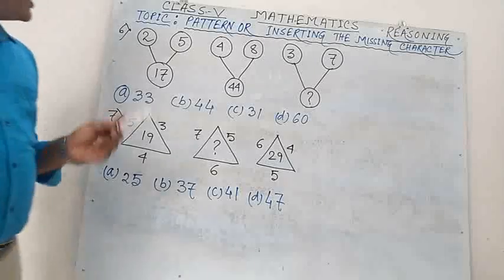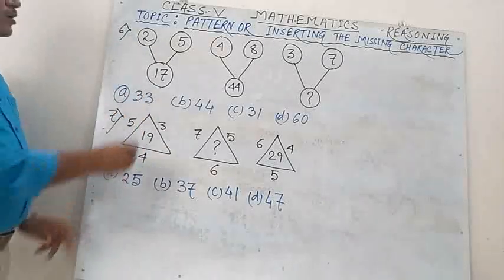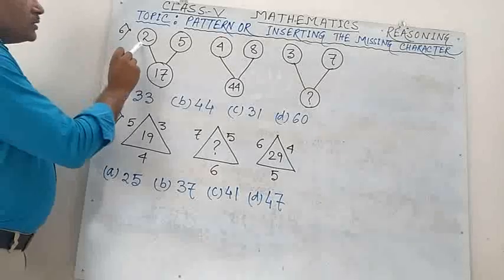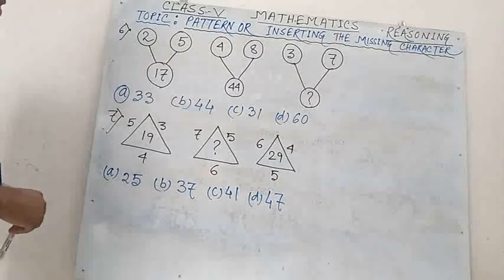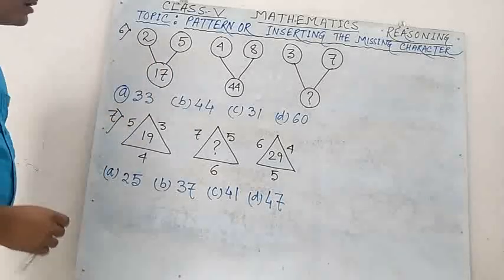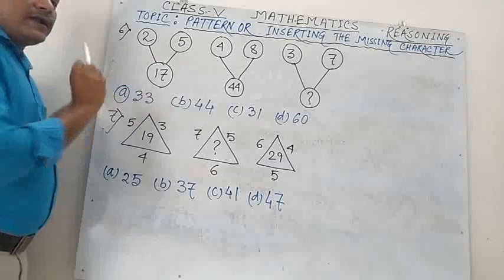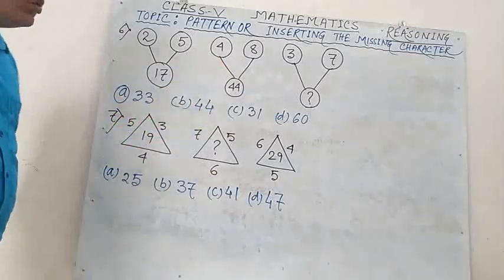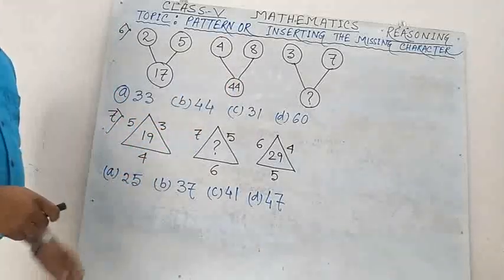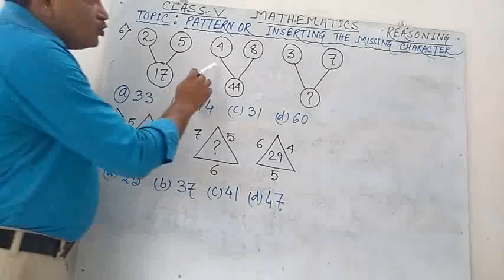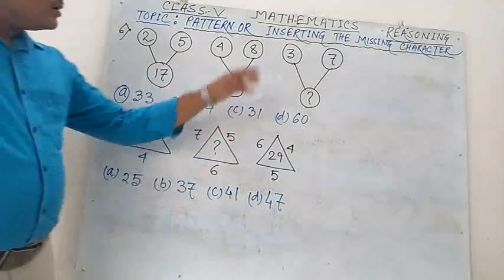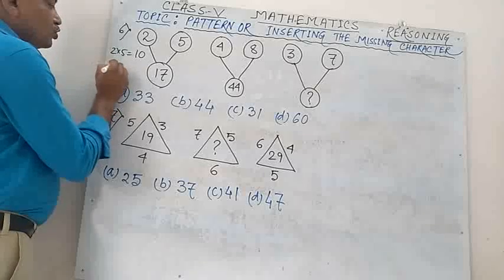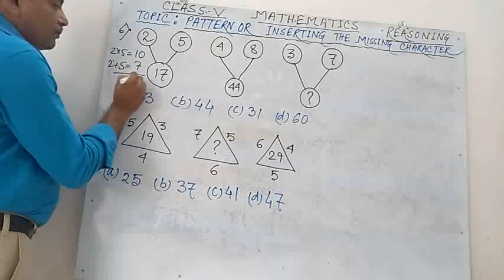The values are: 2, 5, 17; then 4, 8, 44; then 3, 7, question mark. Find the relation. 2×5 = 10, and 2+5 = 7, so 10+7 = 17. Next: 4×8 = 32, and 4+8 = 12, so 32+12 = 44. So for 3 and 7: 3×7 = 21, and 3+7 = 10, so 21+10 = 31. Option C is correct.